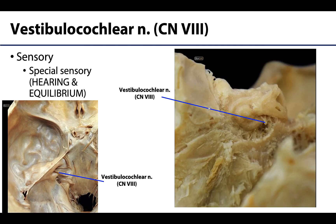Cranial nerve VIII, the vestibulocochlear nerve, is entirely sensory — specifically special sensory — involving hearing, equilibrium, and motion. The vestibulocochlear nerve enters the internal acoustic meatus, leading into the middle and inner ear region, where it divides into the cochlear and vestibular nerves.